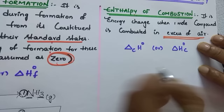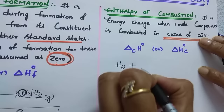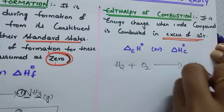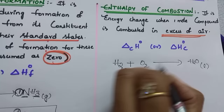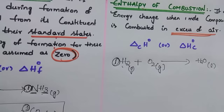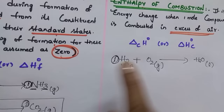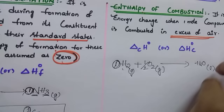For combustion — for example, combustion of H₂: write H₂ on the reactant side, O₂ since combustion occurs in excess oxygen, and H₂O as liquid on the product side (because at room temperature water exists as liquid). H₂ standard state is gaseous and O₂ standard state is gaseous. We want to combust only one mole, so balance accordingly: take ½ O₂. This is the standard combustion equation.